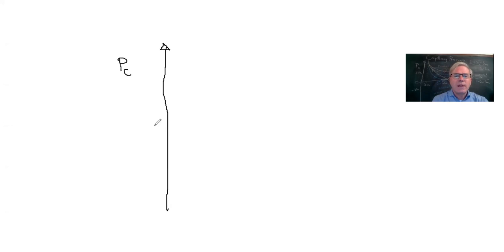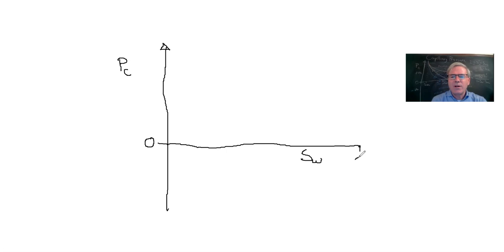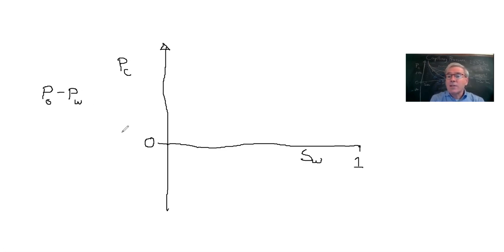Here on the whiteboard, I'm going to show capillary pressure as a function of saturation. On the vertical axis is capillary pressure, with a zero value marked. On the horizontal axis is water saturation S_W, with a value of one. The capillary pressure, for an oil-water system, is traditionally defined as the pressure in the oil minus the pressure in the water.